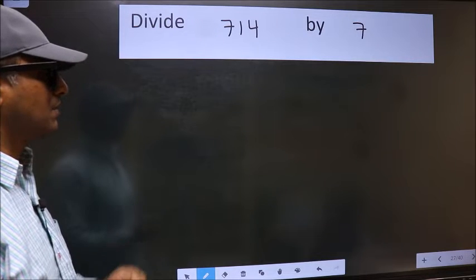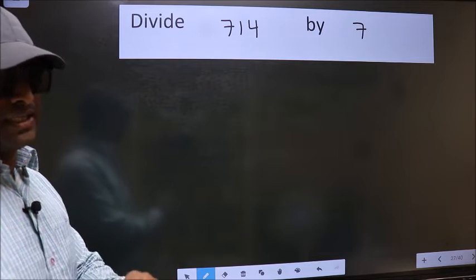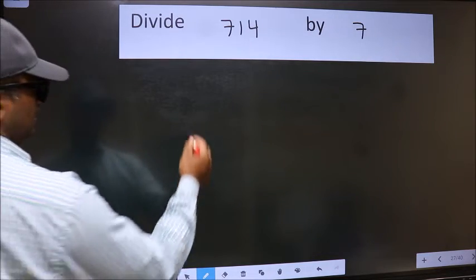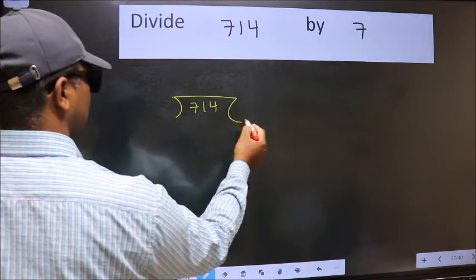Divide 714 by 7. To do this division, we should frame it in this way. 714 here and 7 here.